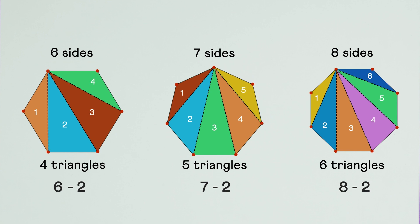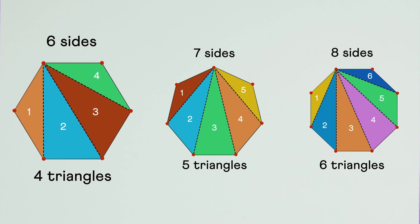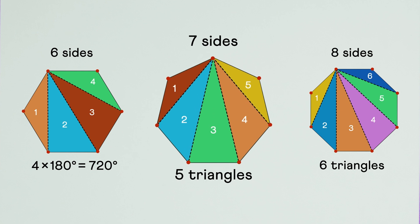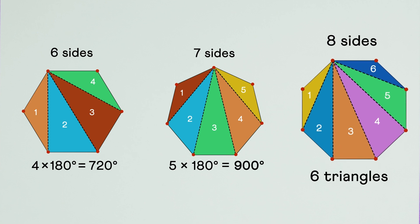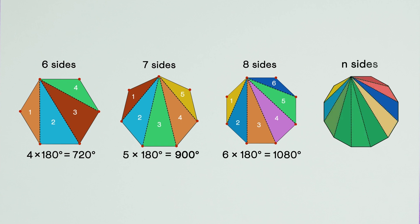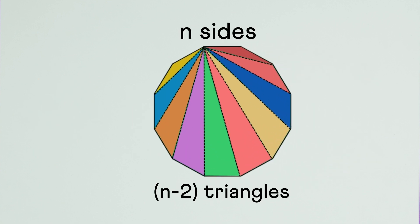And what's the sum of their angles? For a hexagon, that's four times 180: 720 degrees. For a heptagon, five times 180: 900 degrees. Similarly, for an octagon, that would be 1080 degrees. So any n-sided polygon can be divided into n minus two triangles, and the sum of its angles must be n minus two times 180 degrees.